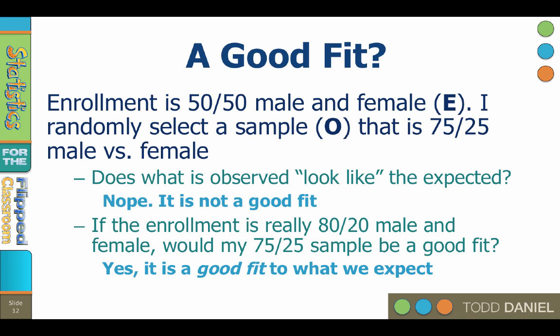The chi-square is an excellent choice for examining proportion distributions within groups, such as distributions within ethnicity, class standing like freshman, sophomore, junior, senior, gender, or education.